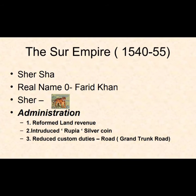Moving ahead to the Sur Dynasty — this was the dynasty of Sher Shah Suri. His real name was Fareed Khan. He was called Sher, meaning Tiger. His administration included reformed land revenue, introduction of the rupiyah — a silver coin — and reduced custom duties on the road, i.e. the Grand Trunk Road.